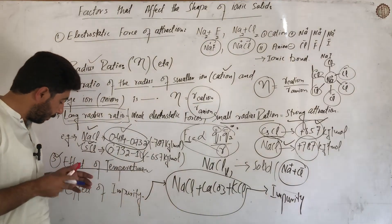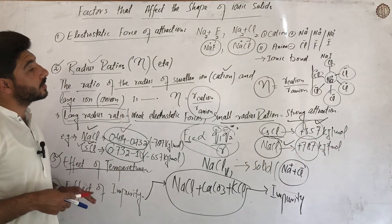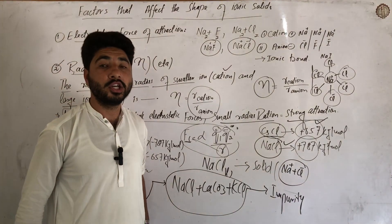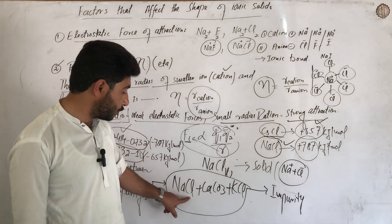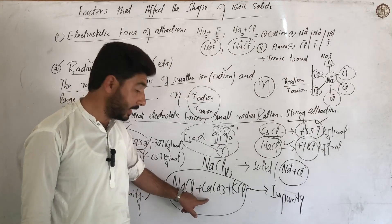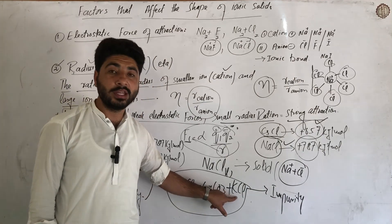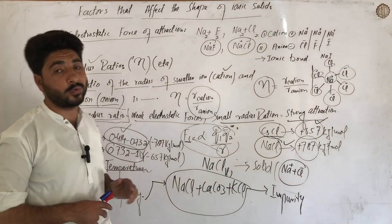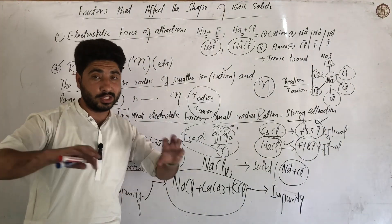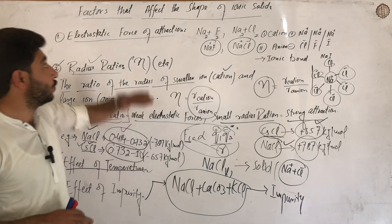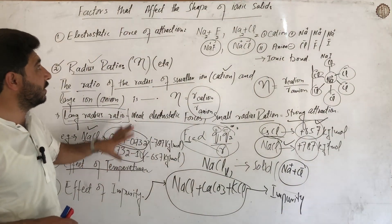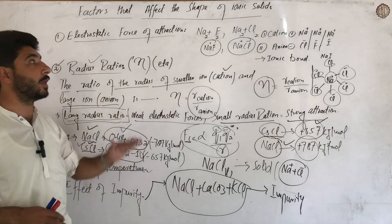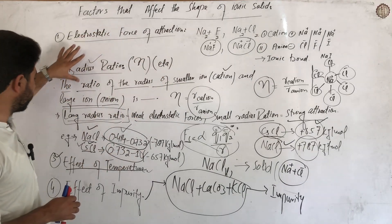So when we consider ionic solids, impurities can change the shape and arrangement. Sodium chloride in its pure nature has a specific image and arrangement, but when impurities are introduced, the nature and structure of the ionic solid changes.